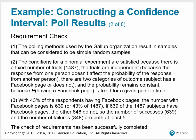The first thing we do is a requirement check. The polling methods used by the Gallup organization result in samples that can be considered simple random samples. The conditions for a binomial experiment are satisfied: there is a fixed number of trials, they are independent, there are two outcome categories, and the probability remains constant for each given point in time. With 43% of the respondents having Facebook pages, the number with Facebook pages is 639 and the number without is 848, and both numbers are at least 5.